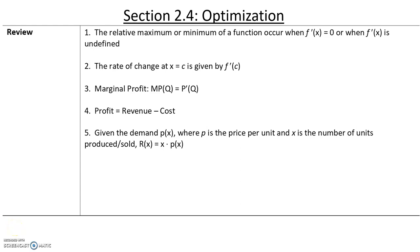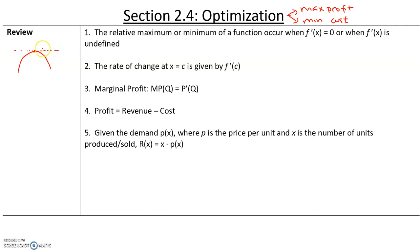In this section, we will talk about optimization. With respect to business calculus, optimization most usually means that we need to either maximize our profit or we need to minimize our cost. Maximum or minimum occur when the slope of the tangent line is equal to zero. That's when we get a maximum or a minimum.